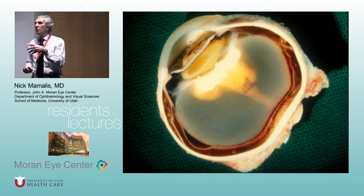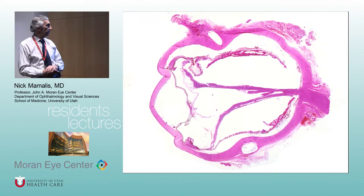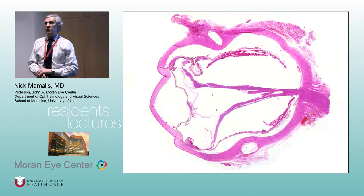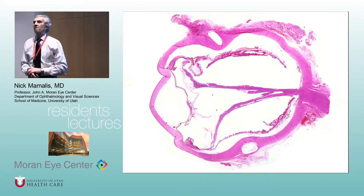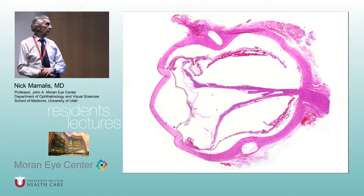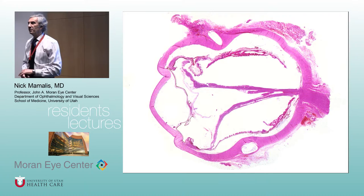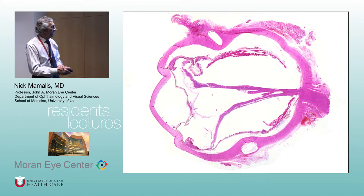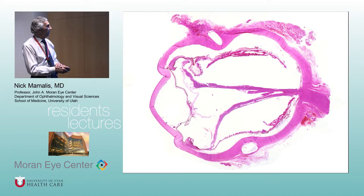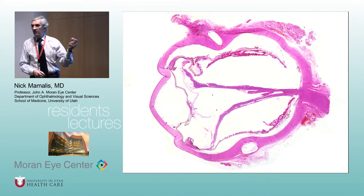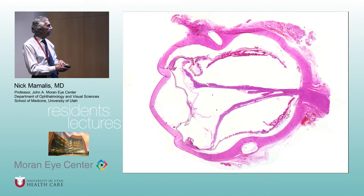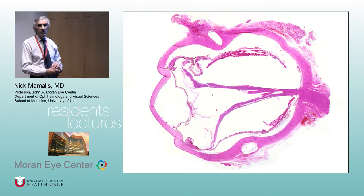This is what it looks like pathologically. Bonus question: this kid had a scleral buckle — you can see where the scleral buckle was. You see a funnel-shaped retinal detachment and the previous scleral buckle in this eye. We want to prevent retinopathy of prematurity from getting to this stage.